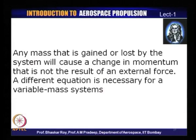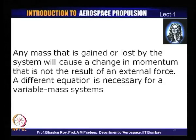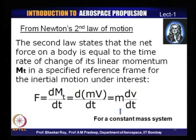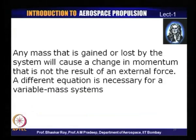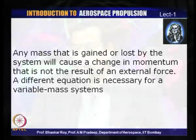Any mass that is gained or lost by the system will cause a change in momentum that is not the result of an external force — a difference equation is necessary for a variable mass system. For example, in a spacecraft when the stored mass is used up over a period of time, the mass available could be a variable mass. In which case, the equation from Newton's second law would look slightly different. For most of the time we will consider a constant mass system, but if we have a variable mass system, we need to apply a necessary correction.